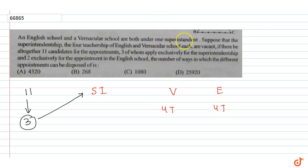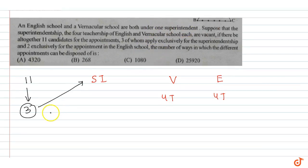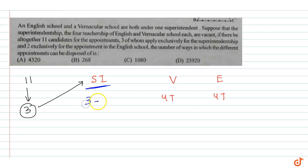So in the three candidates, we have one superintendent position. So how many ways can we select the superintendent? We can select in 3 ways. We have been given three specifically for the superintendent.